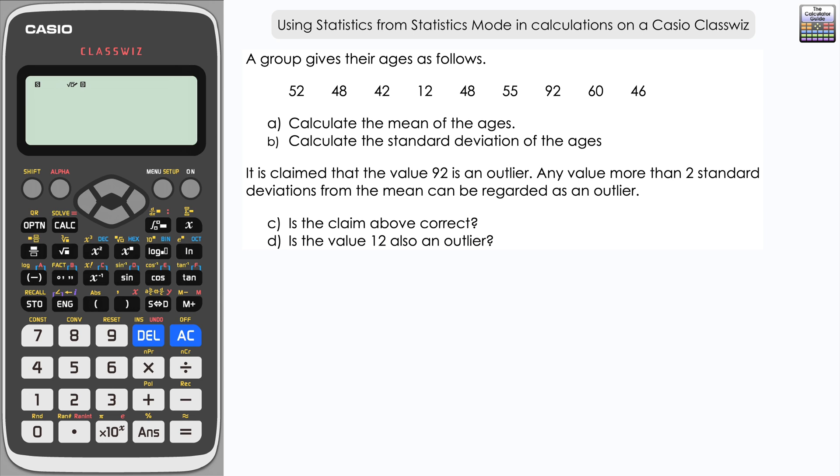Let's take a look at the question. A group gives their ages as follows, and we need to calculate the mean of the ages and the standard deviation of the ages.